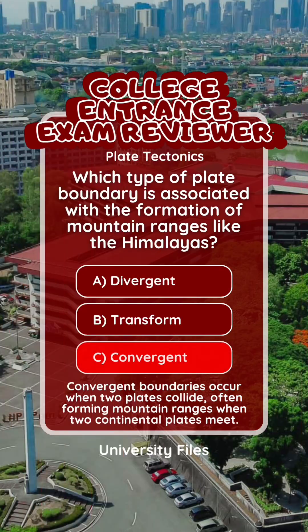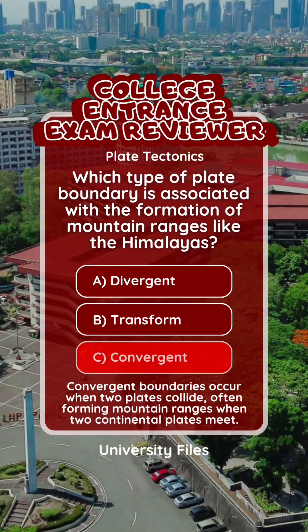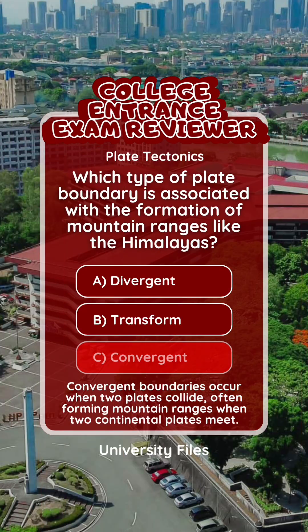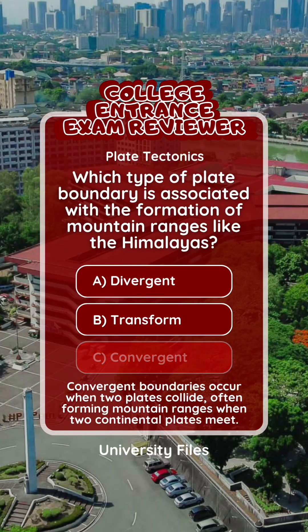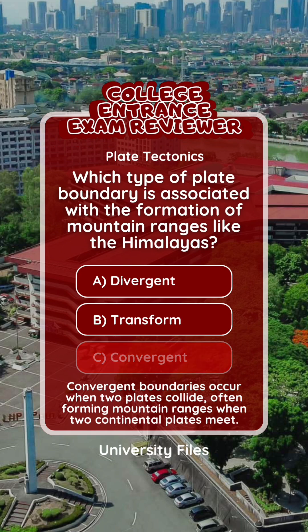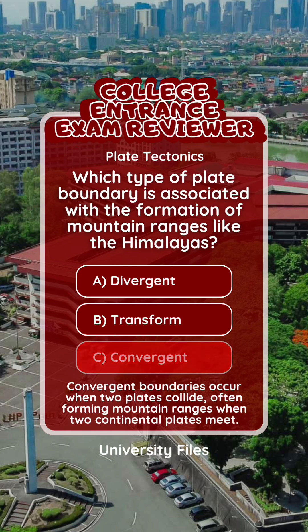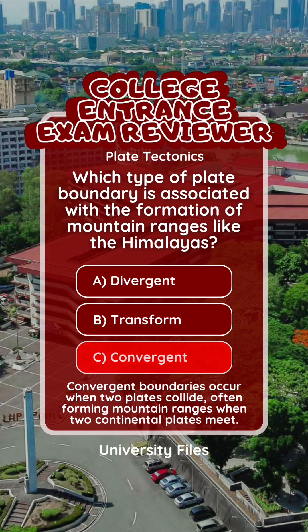The correct answer is letter C, convergent. Convergent boundaries occur when two plates collide, often forming mountain ranges when two continental plates meet.